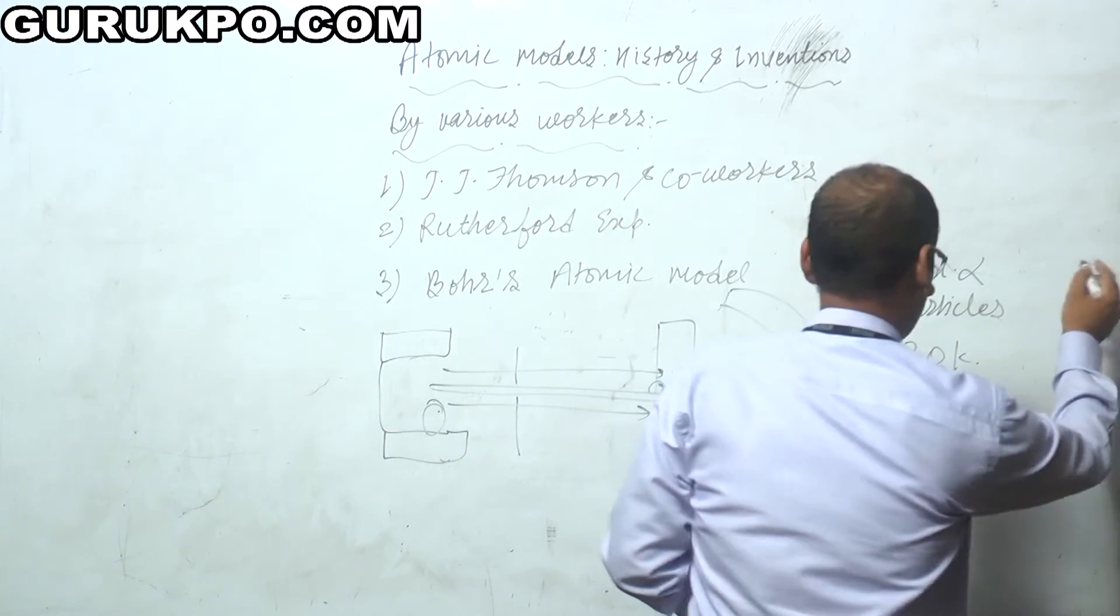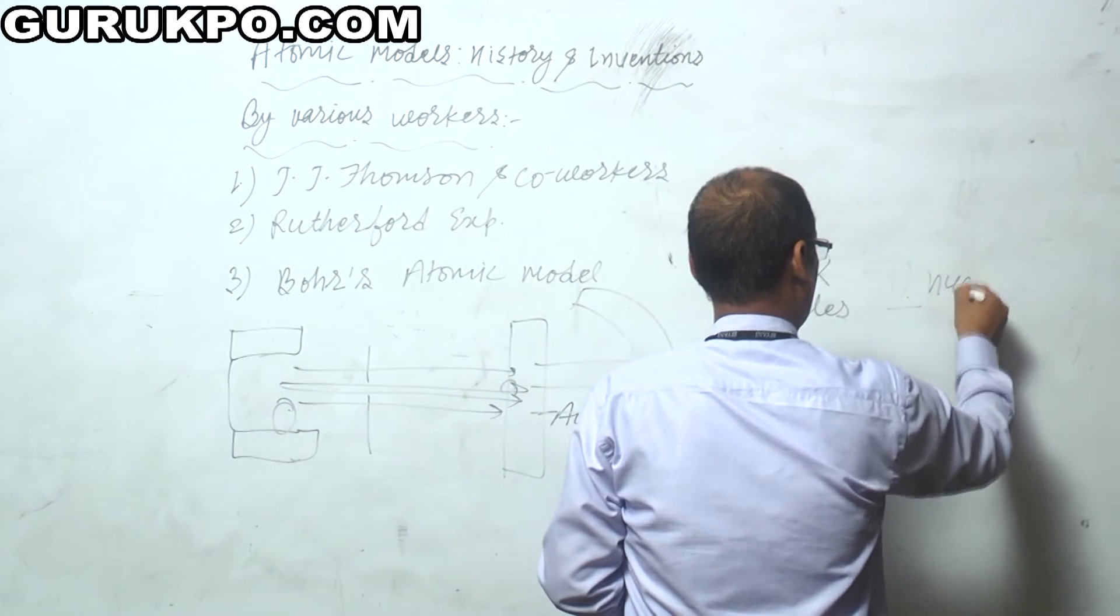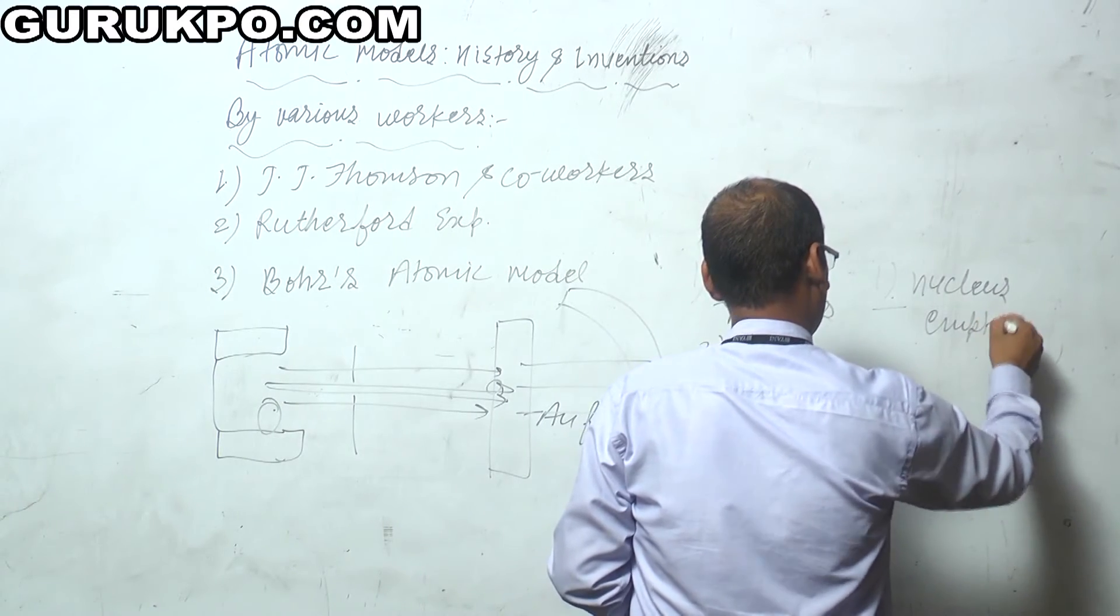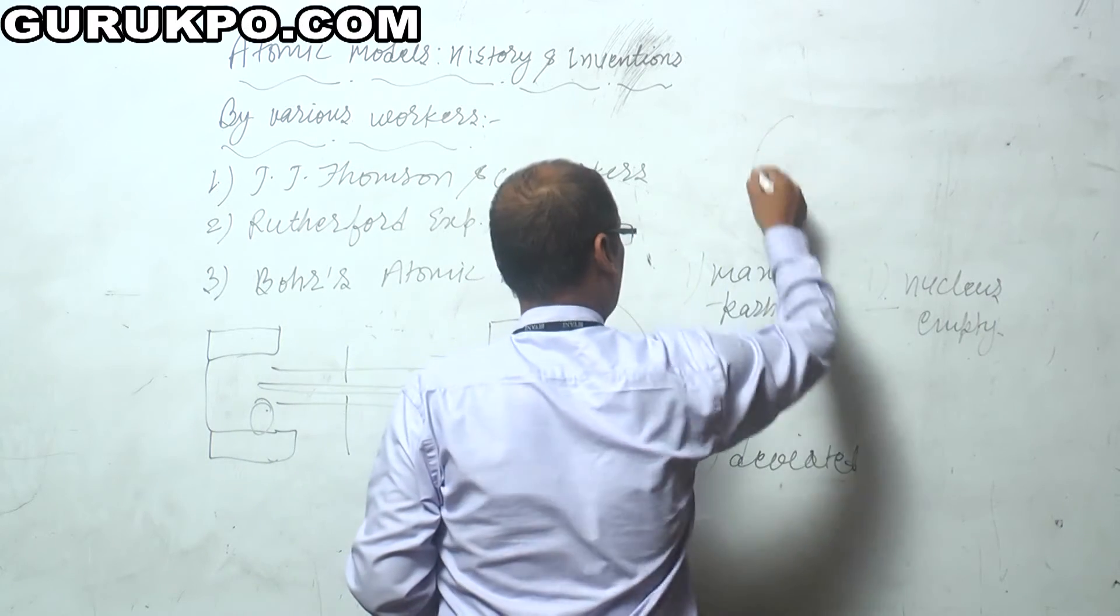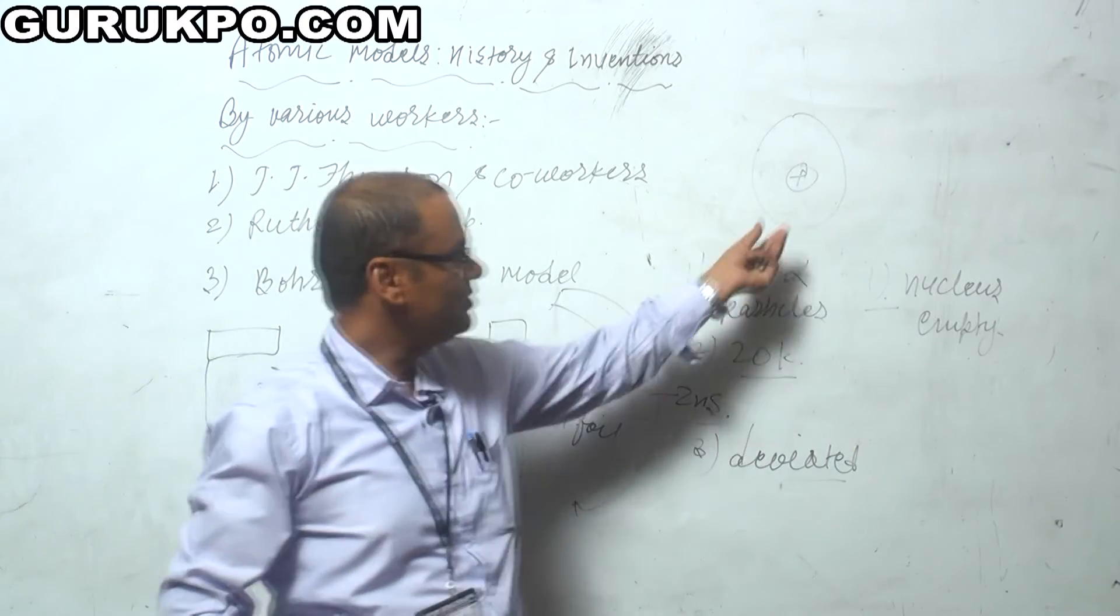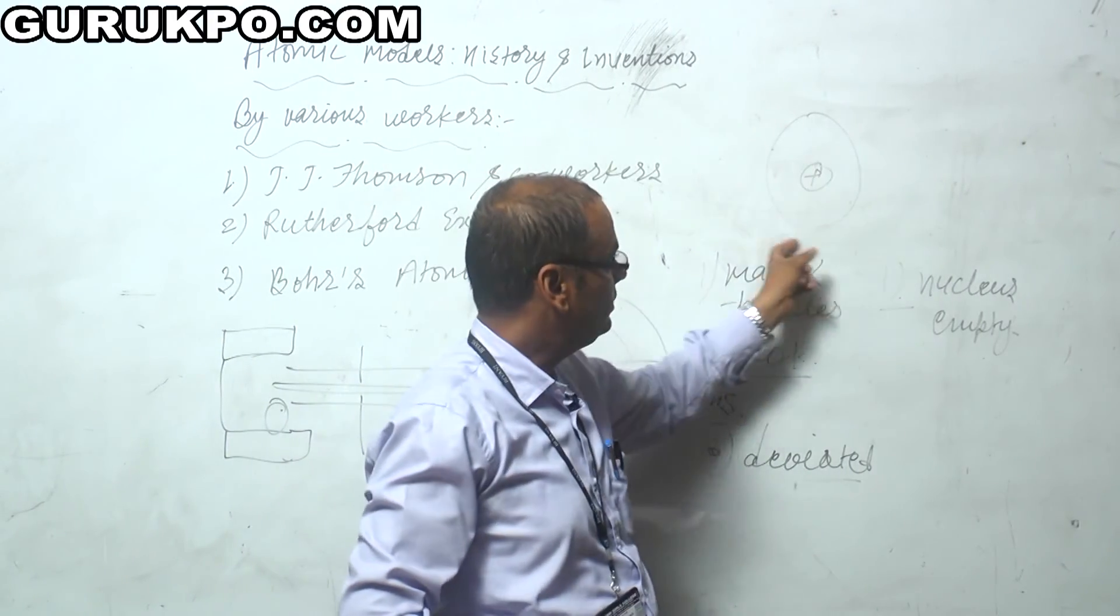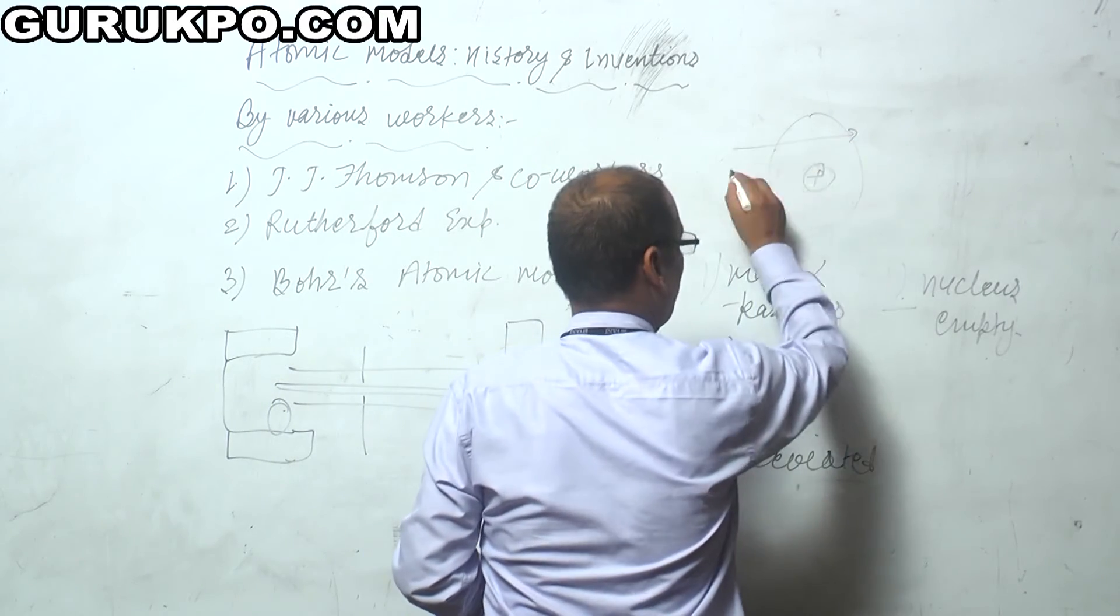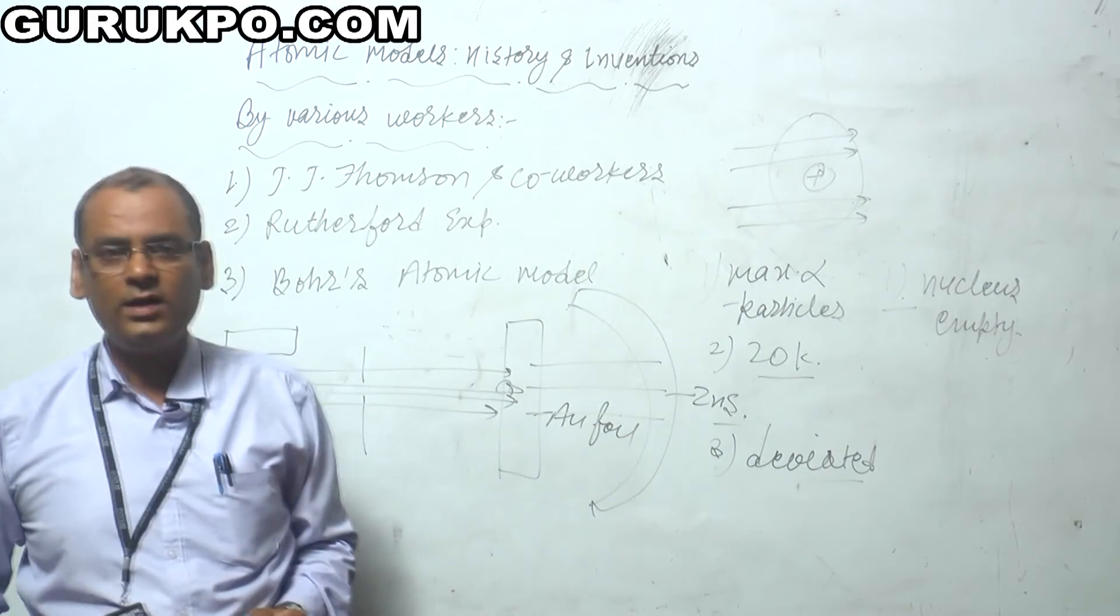From the first part, he concluded that the max part of the nucleus was empty. If we want to elaborate it, he suggested that the nucleus was concentrated at the center of the atom and the maximum part of the atom was empty. That's why when the alpha particle hits on the surface of the gold atom, it got undeviated.